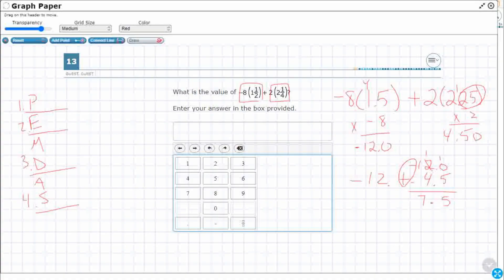All right, so it is 7.5, and it is negative. So it's a negative 7.5.